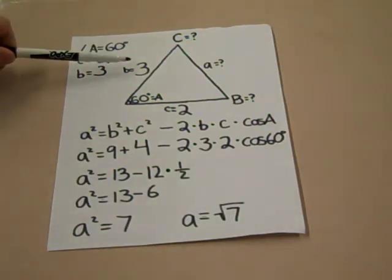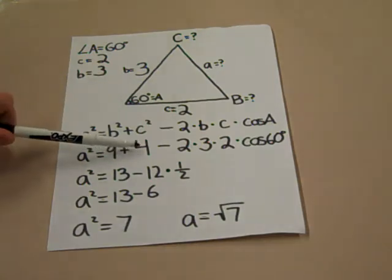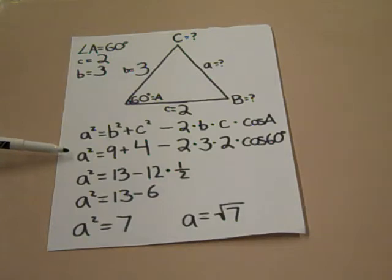Since B is 3 and C is 2, we know that B squared is 9 and C squared is 4. So we get the equation A squared equals 9 plus 4 minus 2 times 3 times 2 times cosine of 60.